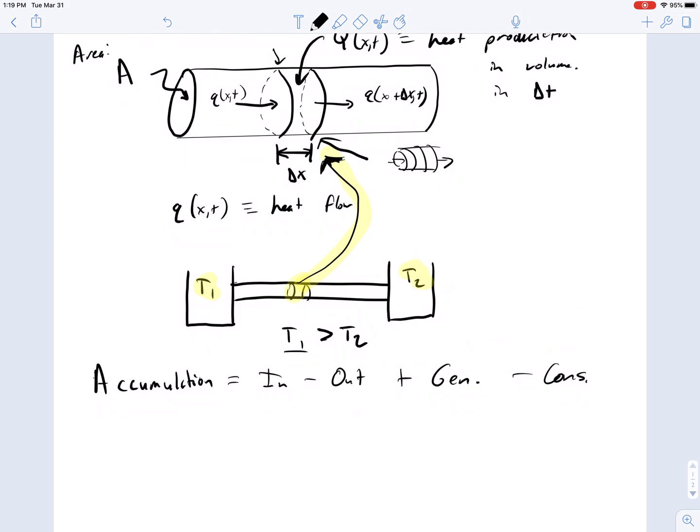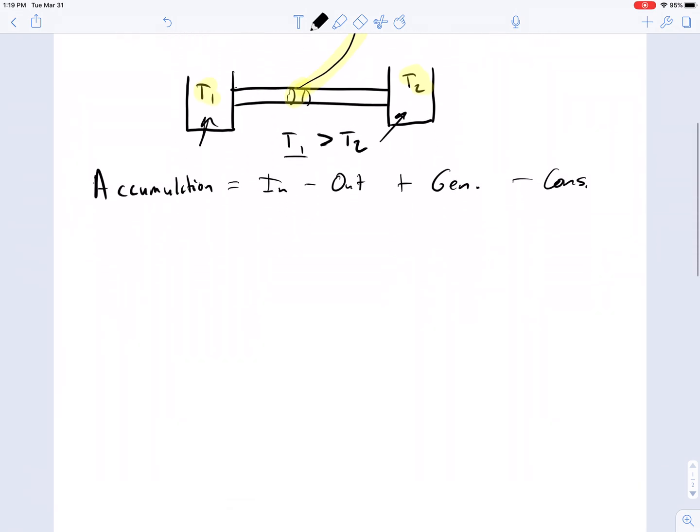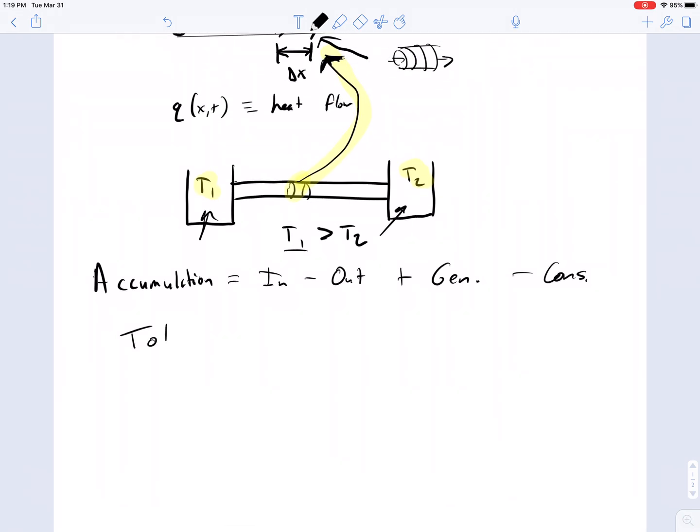So suppose for this problem that temperature one is greater than temperature two. And then the total, first thing we can do is get some basic nomenclature. The first thing is that the total energy in a slice is going to be equal to the energy density.